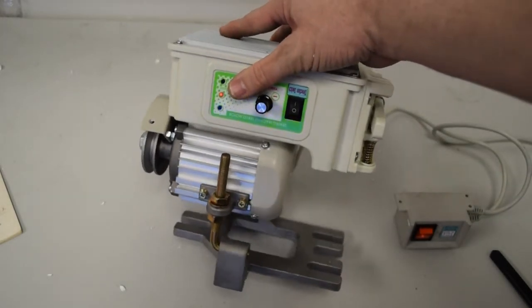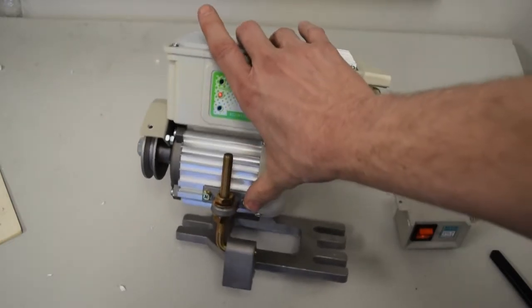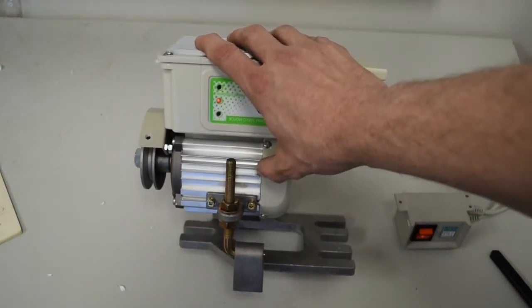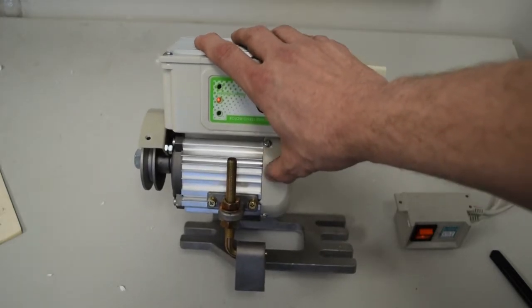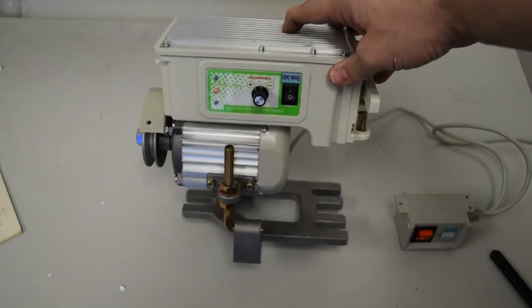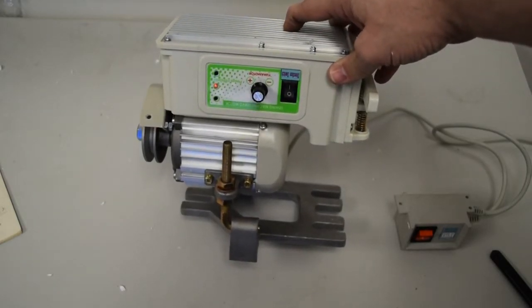But I think if we get rid of this box on the top here and the stand and make a new mount for this nice little motor, this is going to be a really nice addition and I think a worthwhile upgrade for anybody who has one of the Asian made 9x20 lathes.